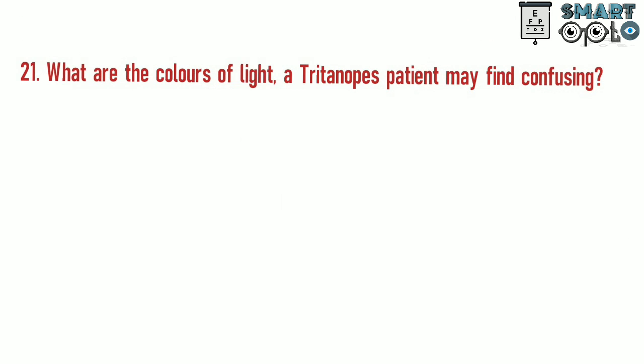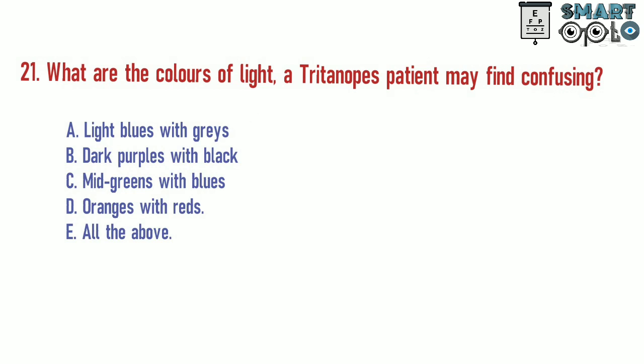Question 21. What are the colors of light a tritanope patient may find confusing? A. Light blues with grays. B. Dark purples with black. C. Mid-greens with blues. D. Oranges with red. E. All of the above.